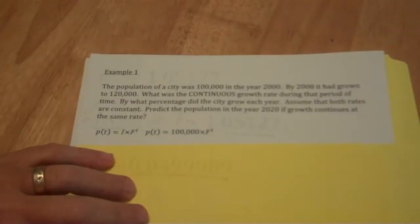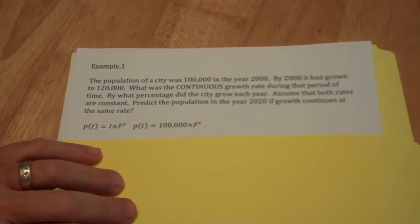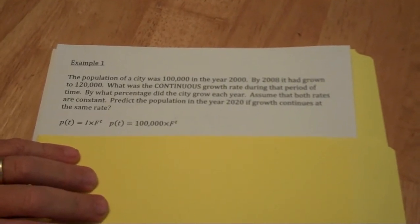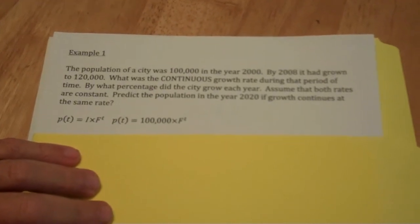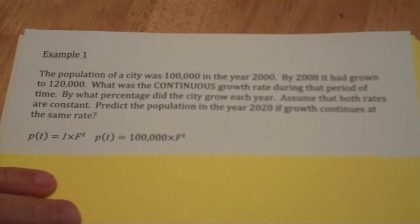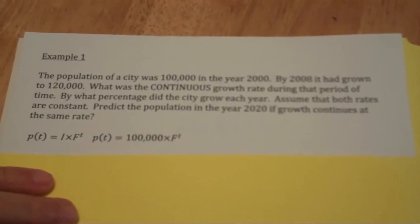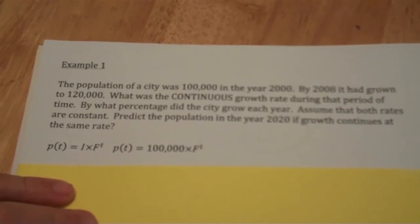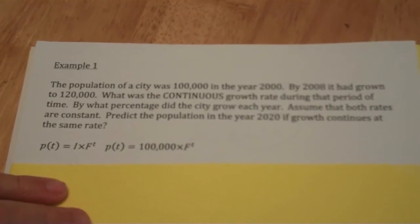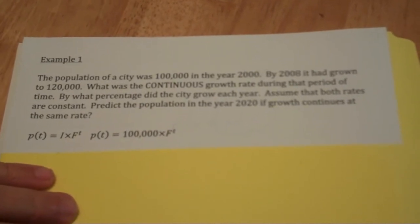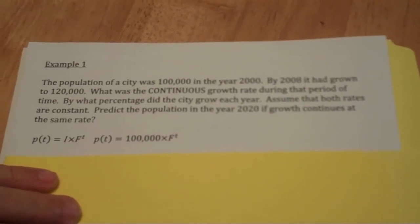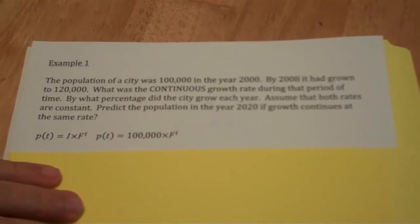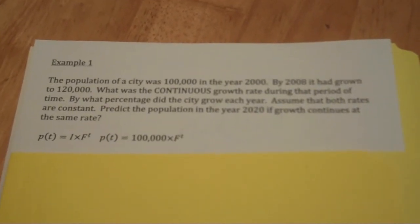When we talk about interest rates, typically that interest is occurring at one specific point in time, like at the end of every day or at the end of every quarter. There are many times where it's more appropriate to talk about continuous growth. Let's look at such an example. The population of a city in the year 2000 was 100,000 people. Eight years later in 2008, it had grown to 120,000, and I'd like to find the continuous growth rate continuing throughout that entire period. I would also like to find what percentage the city grew by during each year, and finally predict the population in the year 2020.